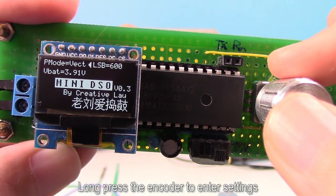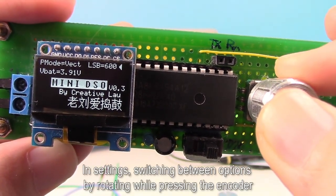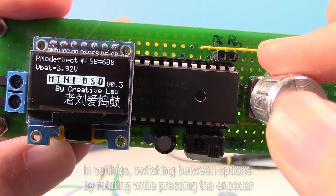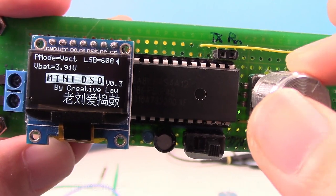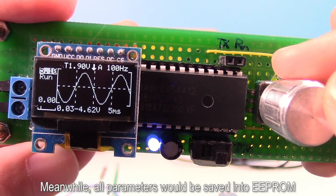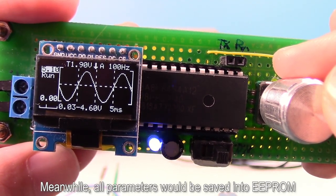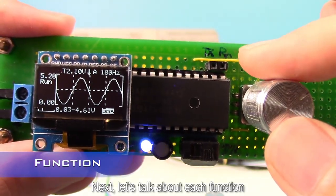Long press the encoder to enter settings. In settings, switch between options by rotating while pressing the encoder. Adjust parameters by rotating the encoder. Long press the encoder to return to the main interface. Meanwhile, all parameters will be saved into EEPROM. Next, let's talk about each function.